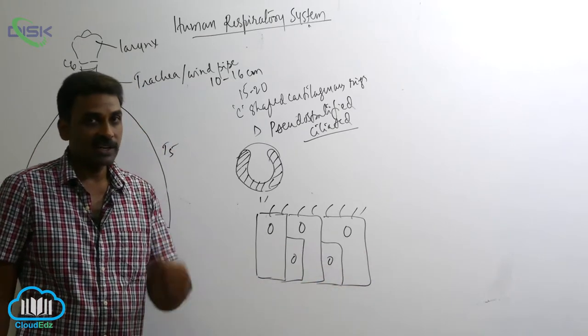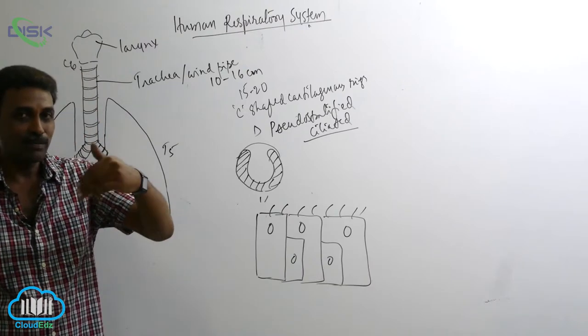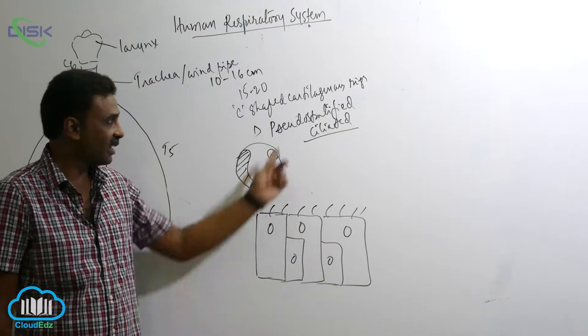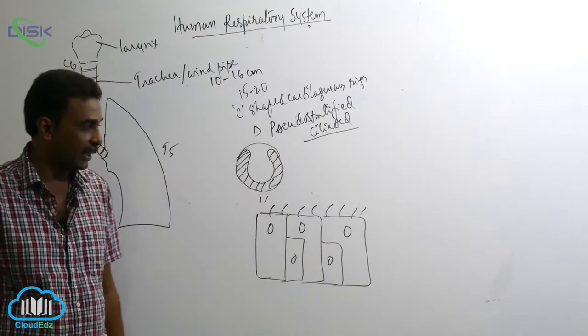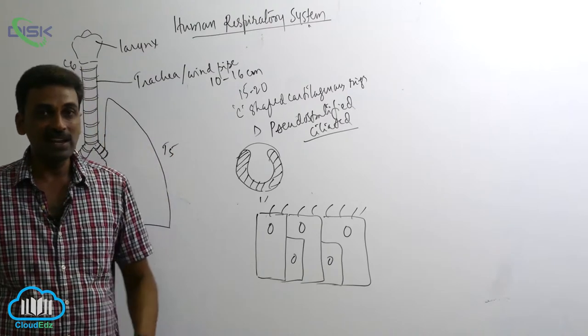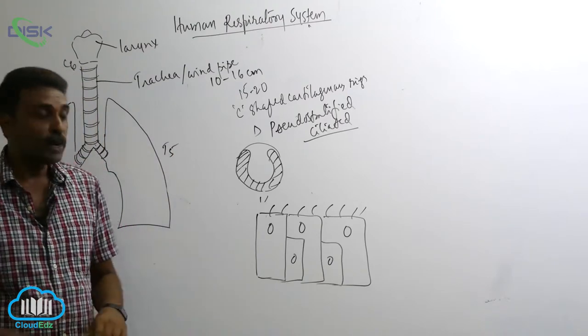One after another. So cells are arranged one besides another. So it is a simple epithelium only but appears to be stratified. That's why it is called pseudo stratified epithelium. And you can see cilia.